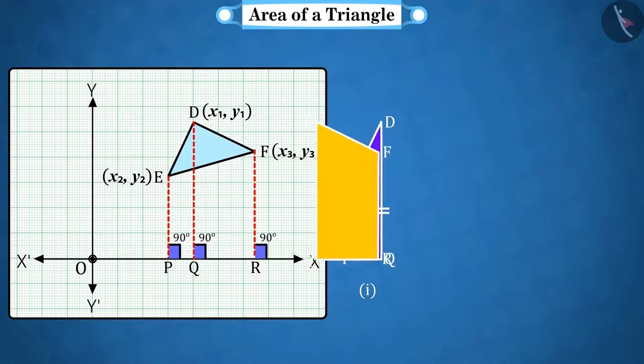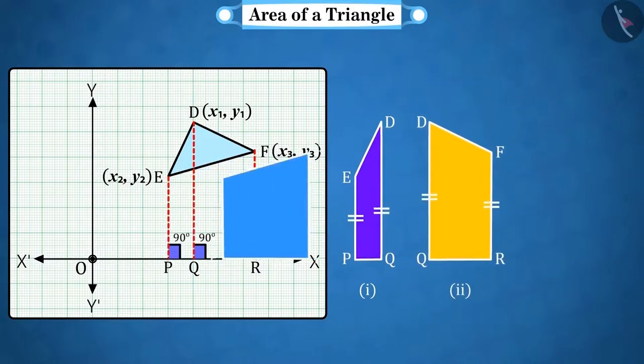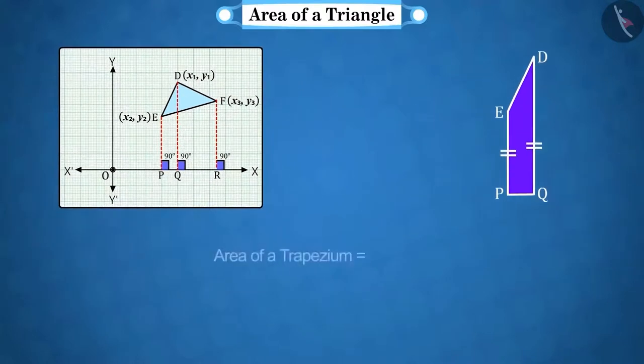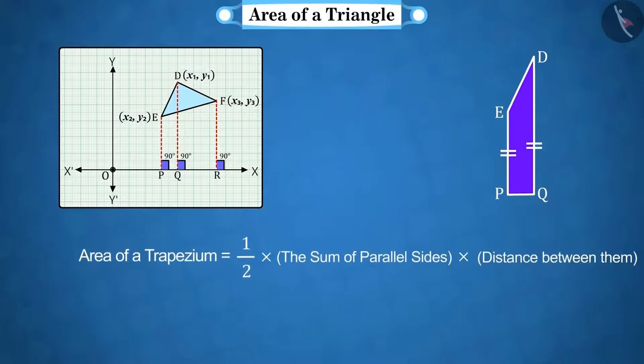Similarly, DQRF and EPRF will also be trapeziums. Can you tell what is the formula of the area of trapezium? Good! The formula to find the area of a trapezium is 1 by 2, the sum of the parallel sides multiplied by the distance between them.